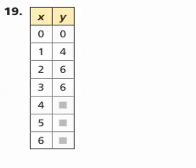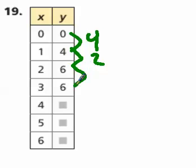We have another quadratic table that we're being asked to find the missing values. So we're going to analyze the differences. 4. So this is a difference of 2. Here we have a difference of 0.